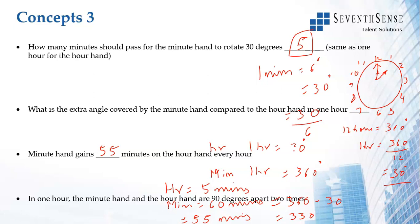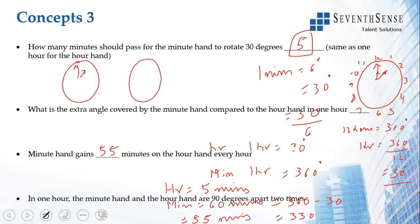Another important fact: in one hour, the minute hand and the hour hand are 90 degrees apart two times. For example, between 2 o'clock and 3 o'clock, they will be at 90 degrees roughly around 2:25 (slightly after) and again at 3 o'clock. So between 2 and 3, there are two instances where the hands are 90 degrees apart.